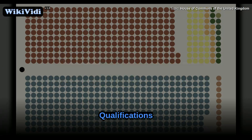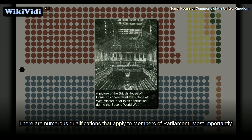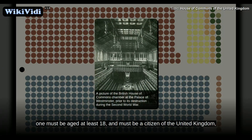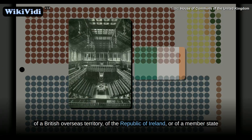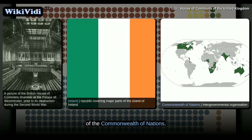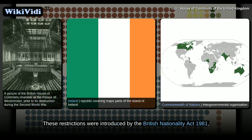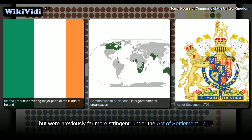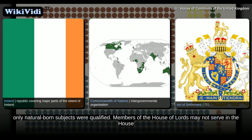Qualifications. There are numerous qualifications that apply to members of Parliament. Most importantly, one must be aged at least 18, and must be a citizen of the United Kingdom, of the British Overseas Territory, of the Republic of Ireland, or of a Member State of the Commonwealth of Nations. These restrictions were introduced by the British Nationality Act 1981, but were previously far more stringent. Under the Act of Settlement 1701, only natural-born subjects were qualified.